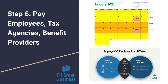Step six: pay your employees, tax agencies, and benefit providers. Once you've calculated gross pay and deducted taxes, deductions, and benefits, you'll be left with net pay — the actual amount to issue to your employees. It's really important that you do these calculations on time so paychecks are issued by pay day. Once your employees are paid, make sure you focus on any tax payments or benefit payments that need to be issued by their due date to avoid penalties or any lapse in coverage.